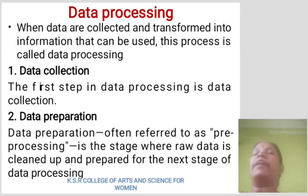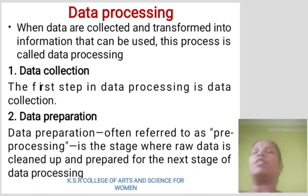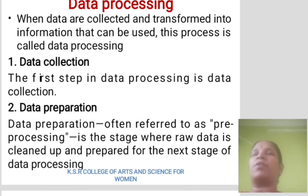Data processing. When data are collected, they are transformed into information that can be used. This process is called data processing. Data collection is the first step in data processing. Data pre-preparation, often referred to as pre-processing, is the stage where raw data is cleaned up and prepared for the next stage of data processing.